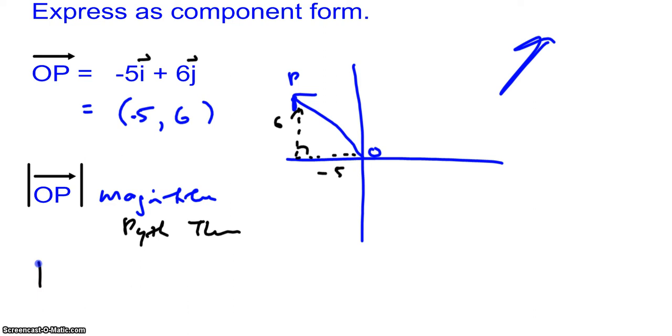So you're going to be using Pythagorean theorem to solve for this. In other words, to find OP, you're going to take the square root of the components, the components, which is negative 5 squared plus 6 squared.